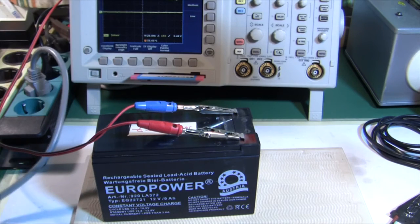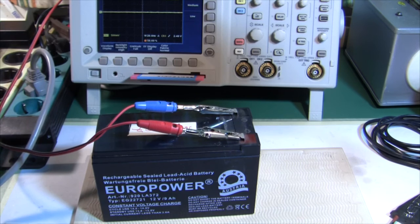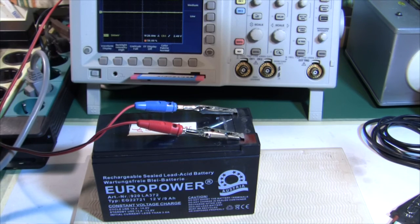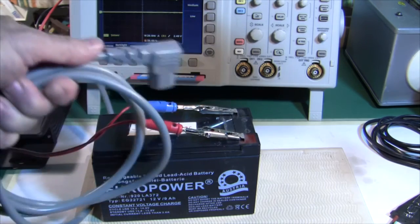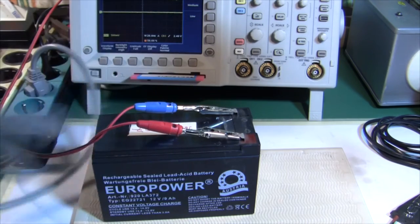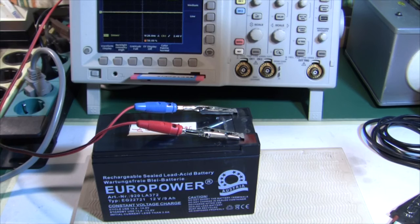You could install a battery charger inside the scope to charge it when it's running on the mains again. But I don't do this. I charge the battery externally.